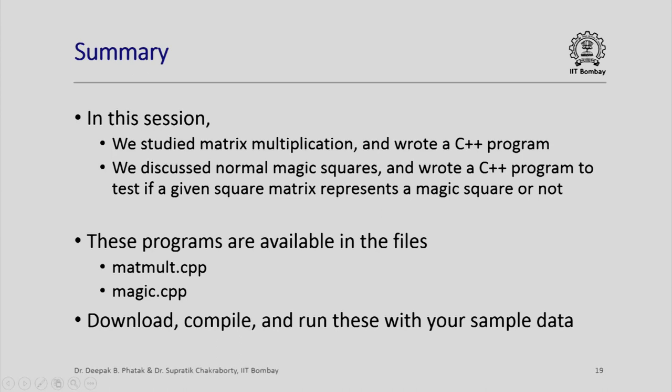Interesting example. We now learnt about the magic squares and we also saw how to manipulate matrices in order to find their row sums, column sums, diagonal sums. We also wrote a program in this session for multiplying matrices, a simple and elegant program but which can do a lot of computations even for a 100 by 100 matrix. These programs as I mentioned are available in the files matmult.cpp and magic.cpp. Please download and compile these programs and run them with your own input. Thank you very much.